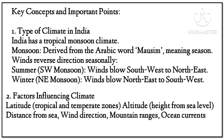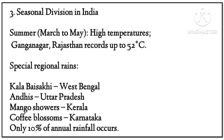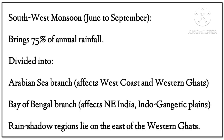Seasonal divisions in India: Summer (March to May) sees high temperatures — Ganganagar, Rajasthan has recorded up to 50 degrees Celsius. Special regional rains include Kalbaisakhi in West Bengal and Uttar Pradesh, Mango Showers in Kerala, and Coffee Blossoms in Karnataka. Only 10 percent of annual rainfall occurs during summer.